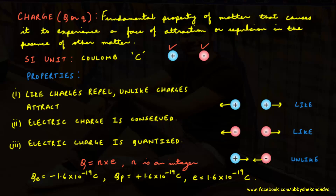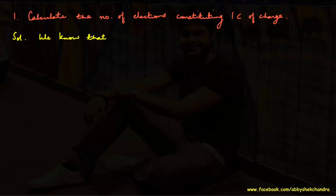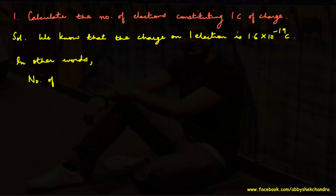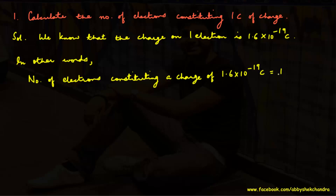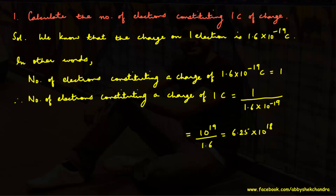Example 1: Calculate the number of electrons constituting one coulomb of charge. The charge on one electron is 1.6 × 10⁻¹⁹ coulomb, meaning one electron constitutes a charge of 1.6 × 10⁻¹⁹ coulomb. By unitary method, the number of electrons constituting one coulomb equals 1 divided by 1.6 × 10⁻¹⁹, which equals 6.25 × 10¹⁸.